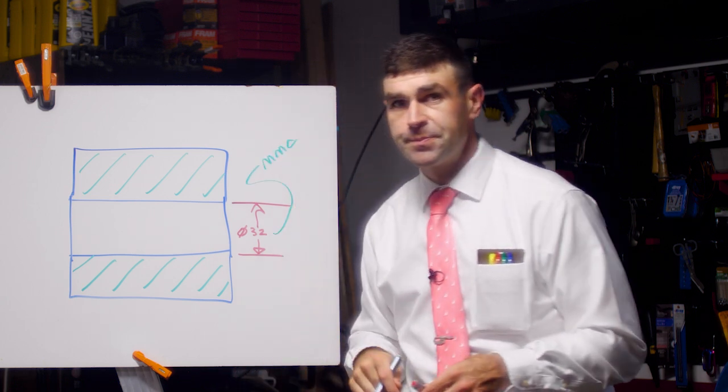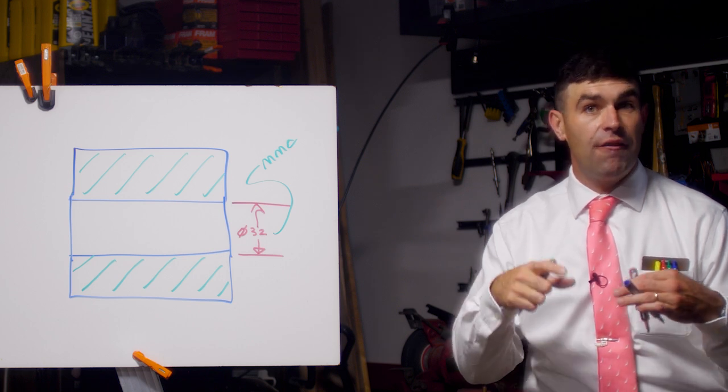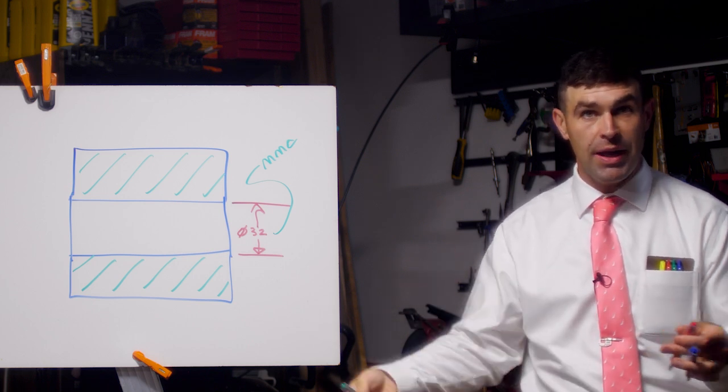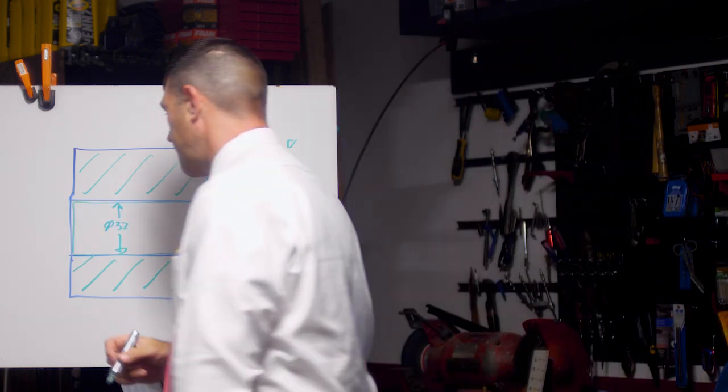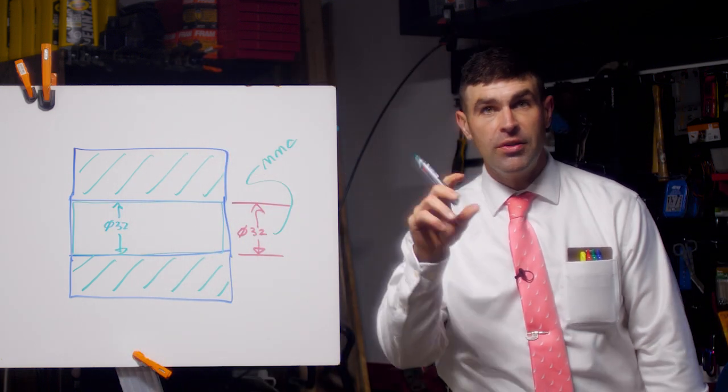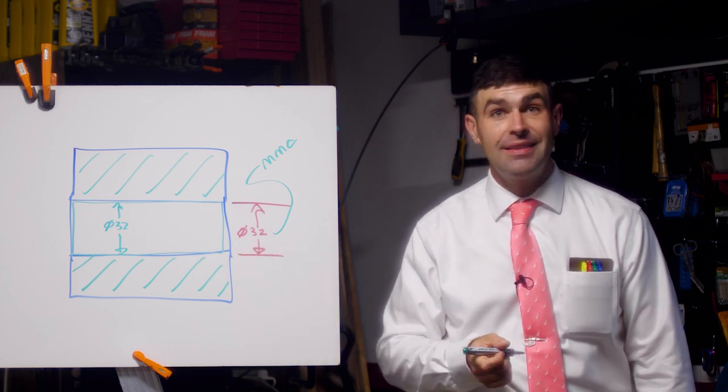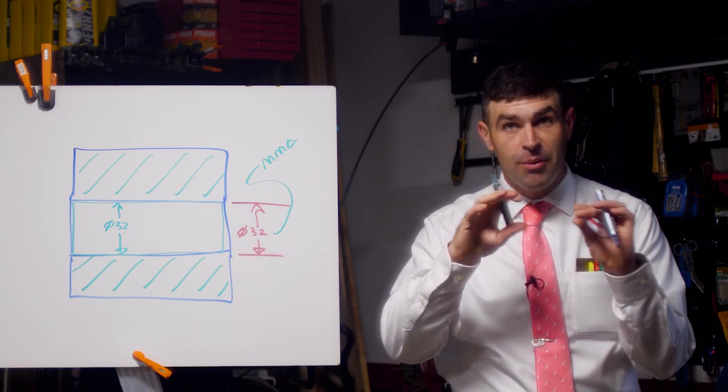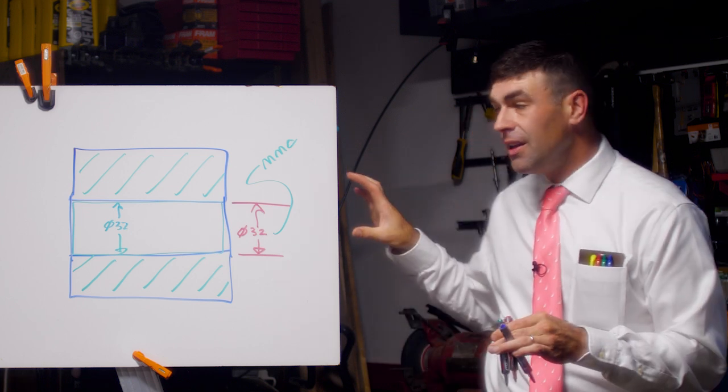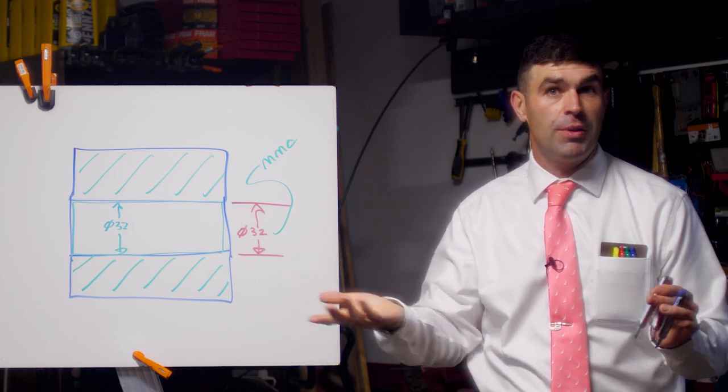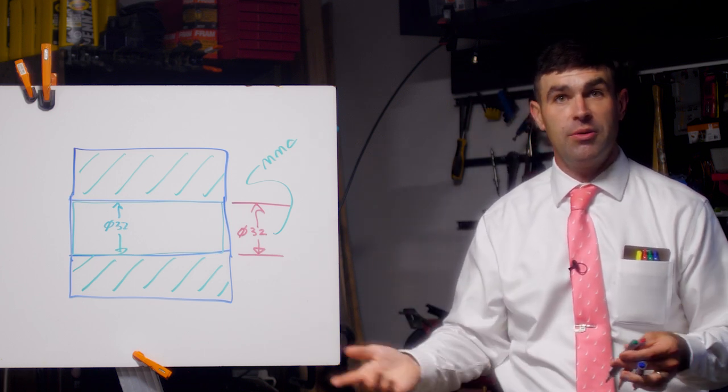So this is going to be set to the MMC of that feature of that cylinder. Now we can't violate that boundary, but we can come in under it. So say we check a cylinder. It's 32 millimeters everywhere we measure it. It's got to fit in this gauge. If it comes in at 32 millimeters and it's bent even a little, it won't fit through a hole of 32 millimeters. And this is convenient. This makes it like a functional check.